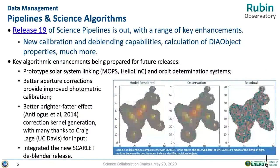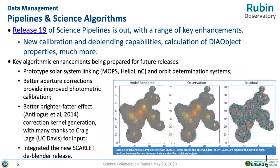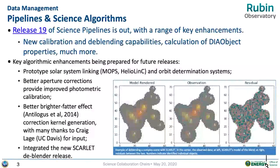The center panel shows observations from HSC Prime. The left panel is the model from the deep blending algorithm, and the right-hand panel is the difference — essentially just noise. So there's been a lot of improvement there, and that's pretty exciting to see progressing fairly well.